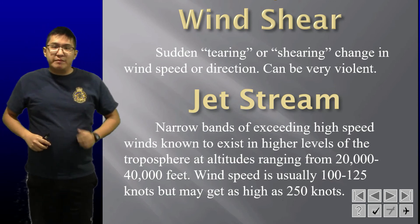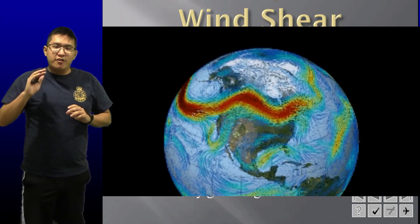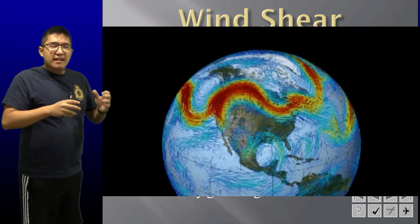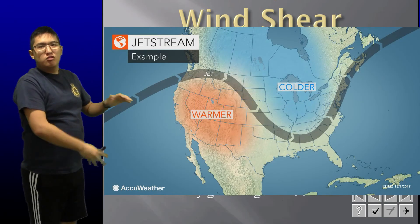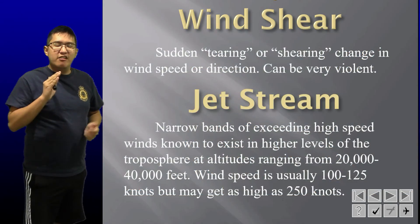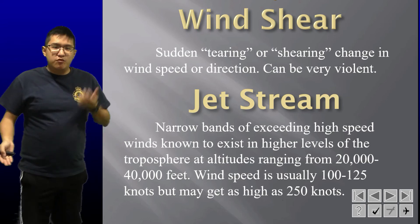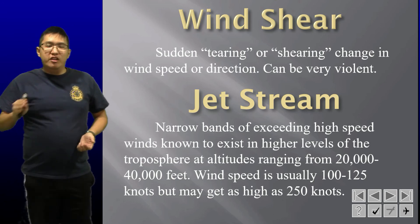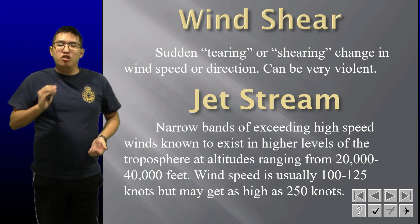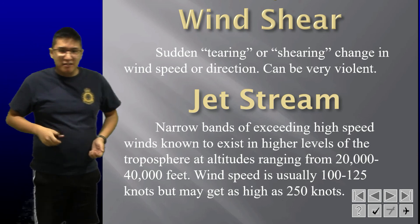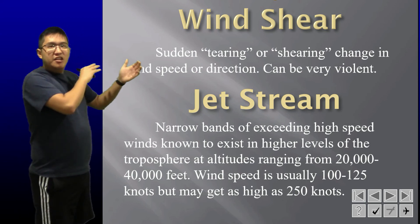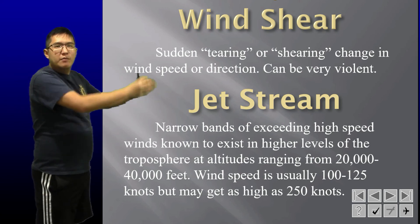Next up we have the jet stream — a narrow band of high-speed air. In North America, there are two different air masses: one over Canada and the other closer to the US. In between them is a stream of very fast air. This usually occurs at altitudes ranging from 20,000 all the way to 40,000 feet, with speeds usually 100 to 125 knots, but it can also get as high as 250 knots — about the average cruising speed of a small jet.